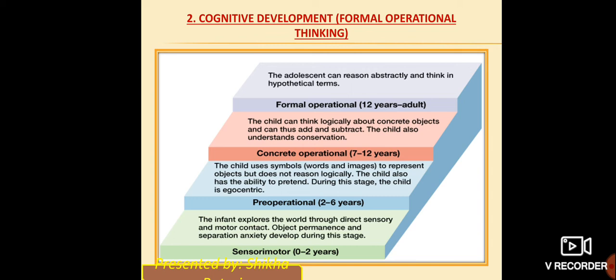In the formal operational stage — which applies to adolescence — the adolescent can reason abstractly and think in hypothetical terms. They think about everything hypothetically.